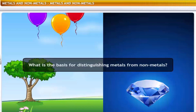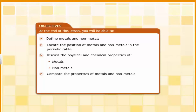What is the basis for distinguishing metals from non-metals? To understand the scientific basis for this classification, you need to examine the physical and chemical properties of metals and non-metals. In this lesson, you will learn about the properties of metals and non-metals, how they form compounds, and how they can be separated.